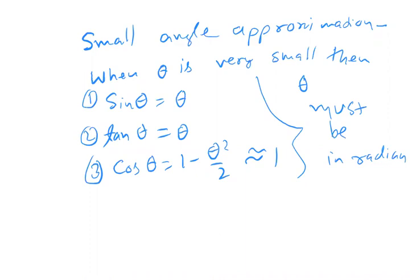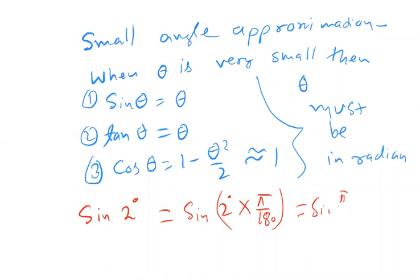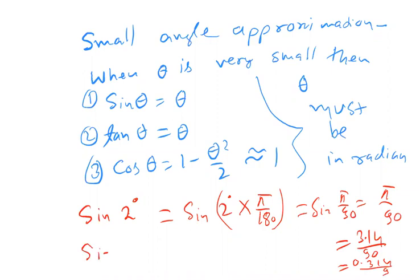Let me explain. For example, sine two degrees: convert it to radians — 2 × π/180 = π/90. Numerically, that is 3.14/90, which gives 0.314/9, approximately 0.0349. So sin 2° ≈ 0.035 type value.